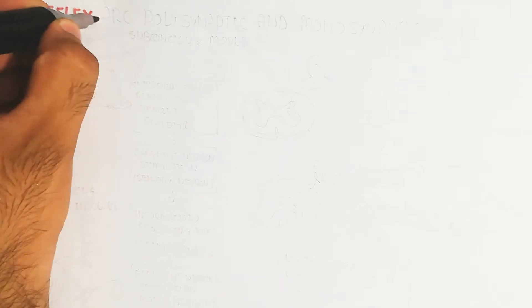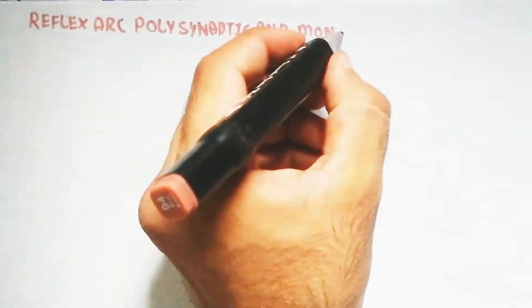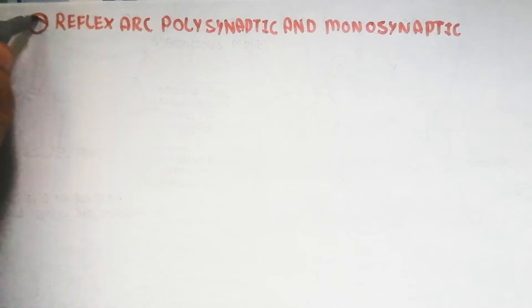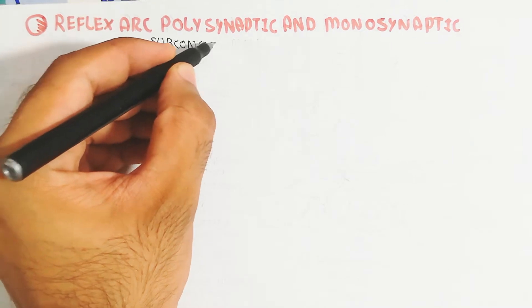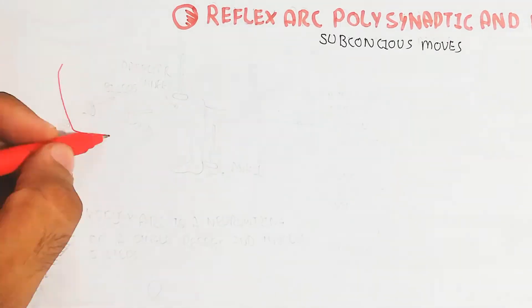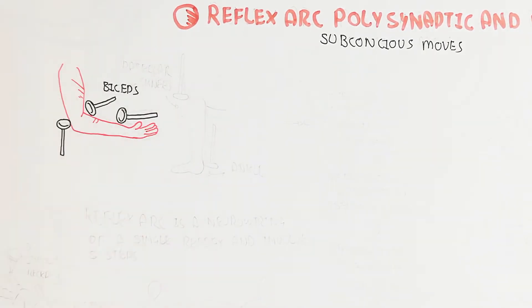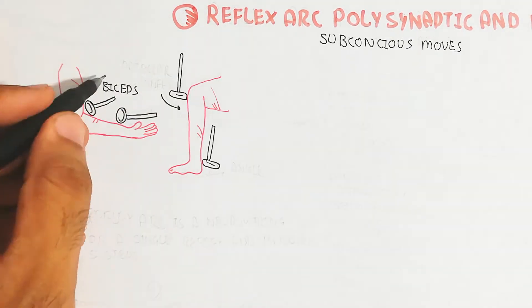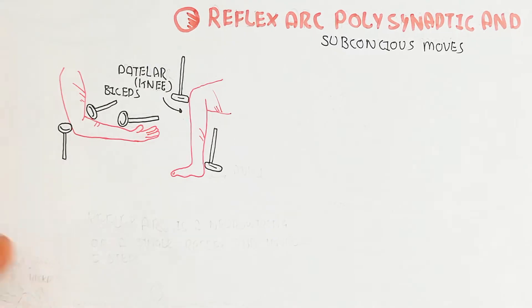In this video we will discuss the reflex arc, specifically the polysynaptic and monosynaptic reflex arc. Poly means many, synaptic refers to the synapse, while mono means one. The reflex arc involves subconscious movements — for example, when a hammer is put onto the arm, a jerk will occur, and this movement is known as a reflex arc.